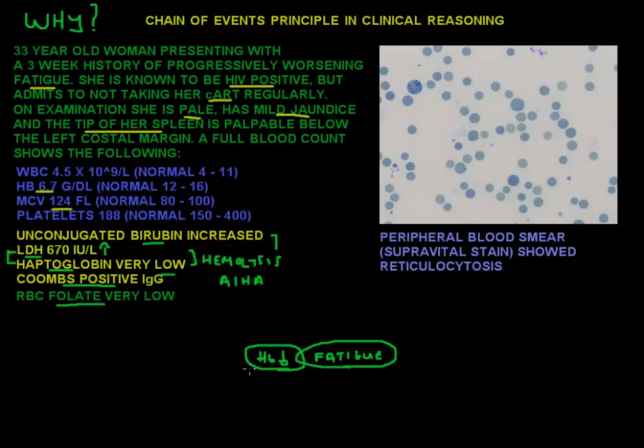Why is she anemic? Because of the autoimmune hemolytic anemia. Why does she have that? Well, most likely in her case because of the HIV. So we have as a chain of events here: HIV leading to autoimmune hemolytic anemia, which then leads to fatigue in this case. Let's call this chain number one.